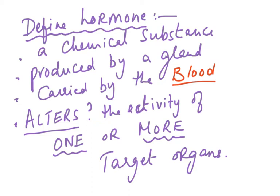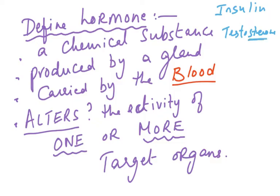Some of you think all hormones are proteins. Well, some hormones are proteins — insulin is a hormone which is a protein — but testosterone, estrogen, and progesterone are not protein hormones; these are steroidal hormones. Testosterone is steroidal, derived from fat and cholesterol. So all hormones are not proteins. We say a hormone is a chemical substance.